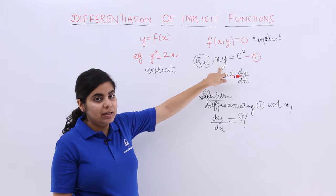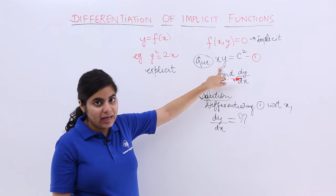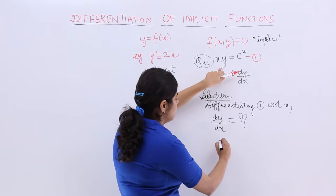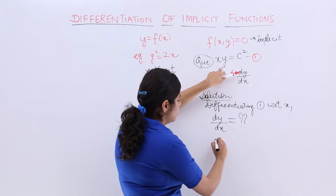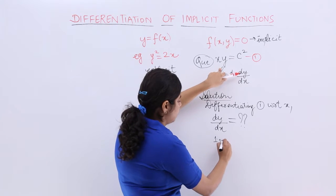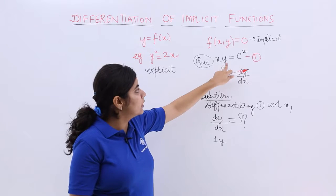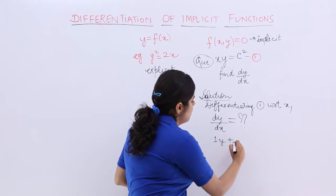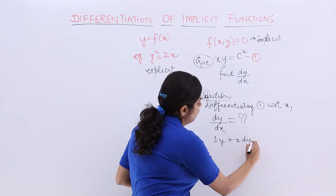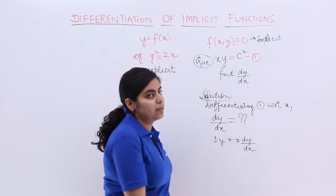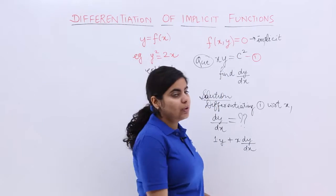x and y are multiplied, so we can apply product rule. So product rule would say that u dash v. So u dash means the differentiation of x, u dash v plus u v dash, plus u into v dash. What is the differentiation of y? dy by dx is equal to c square.